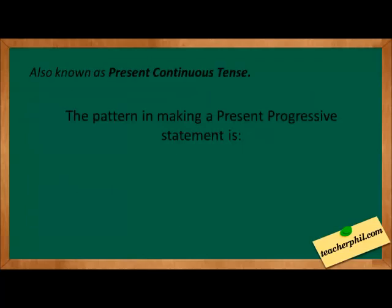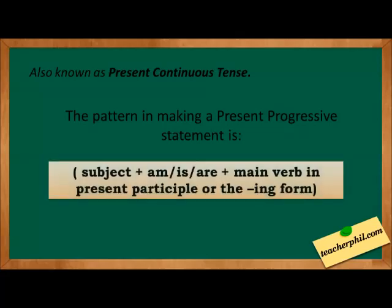Present progressive is also known as present continuous tense. The pattern in making a present progressive statement is: subject plus am, is, or are, plus the main verb in the ing form.